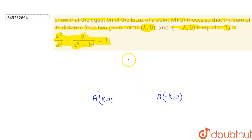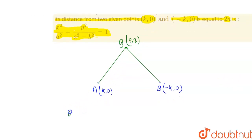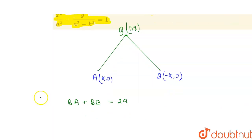We have another point, let's say Q which is (p,q). The distance QA and the distance QB are defined, and according to the question, QA plus QB is equal to 2a.